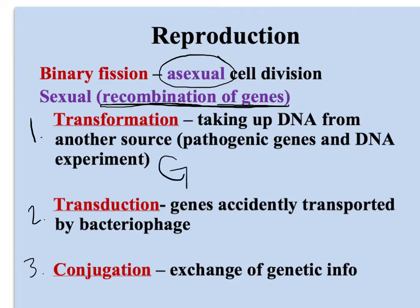A guy named Griffith came up with this — you'll need to know this name: Griffith. So what he did: he had two things of bacteria. One was dead bacteria and it caused disease. A second thing of bacteria was live and healthy — it was good bacteria. He mixed the dead and the live bacteria together, and suddenly his healthy bacteria caused disease. So it picked up pieces of the pathogenic genes from the bad bacteria and used it.